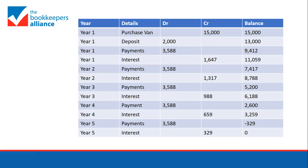This shows an extract of the account using a running balance for the Van HP account. We see the initial two journals — the purchase of the van for £15,000 and the deposit for £2,000 — and you can see that each year, although Ryan makes the same payment of £3,588, the interest reduces, so the capital he's paying increases as the years go on, giving a zero balance at the end.